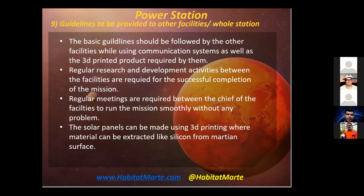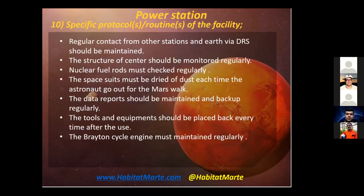Solar panels can be made using 3D printing, where materials like silicon can be extracted from the Martian surface. Protocols include: maintaining regular contact with other stations and Earth; monitoring the structure of the center regularly; checking nuclear fuel rods regularly; drying spacesuits of dust after each Mars walk; maintaining and backing up data ports regularly; returning tools and equipment to their proper place after each use; and maintaining the Brayton cycle engine regularly.